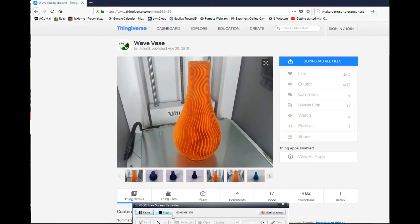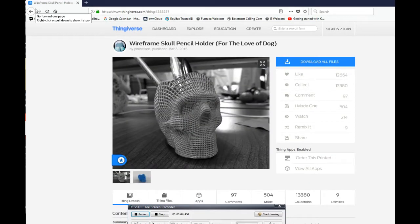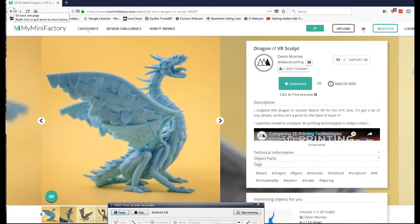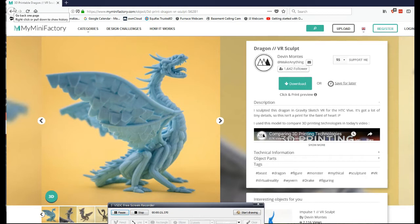So to give credit to the creators, the Wave Vos comes from Thingiverse, it's thing number 983438, created by Didierkl. The Wireframe Skull Pencil Holder was created by Phil Nelson, it's thing number 1388237 on Thingiverse. The U.S. Coin Sorter Version 3 is by Pentland Designs, it's thing number 2189166 on Thingiverse. The Dragon comes from MyMiniFactory, it's called Dragon VR Sculpt by Devin Montez. And finally, Angus Debson of Maker's Muse created the Tolerance Gauge. There's a new version with the tool built right in, either of them can be obtained from Gumroad.